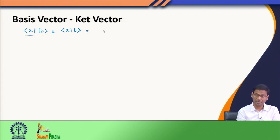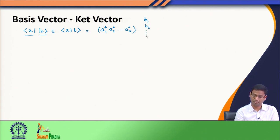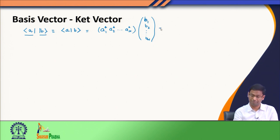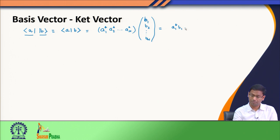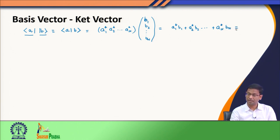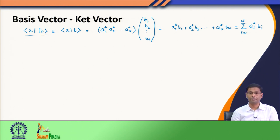When I do this, the bra side is a row vector with complex conjugate quantities and the ket |b⟩ is a column vector with elements b1, b2, ..., b_n. Multiplying these two matrices gives a1*b1 + a2*b2 + ... + a_n*b_n, which I can write as the sum from i equals 1 to n of a_i* times b_i. This is what I should obtain when I take the scalar product of a bra and a ket.